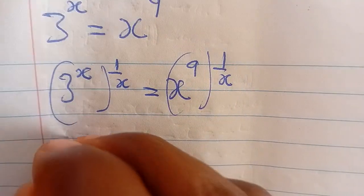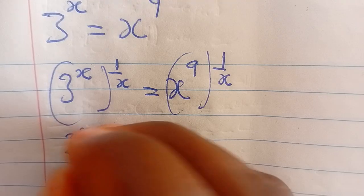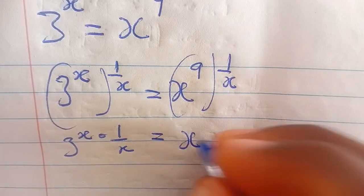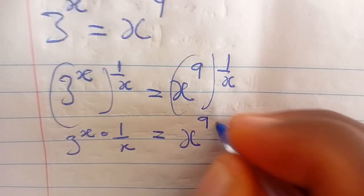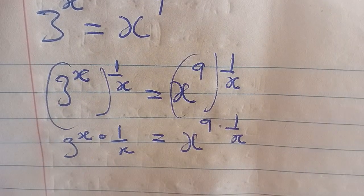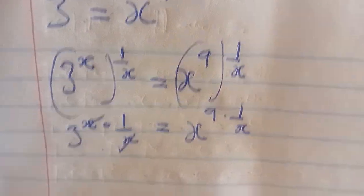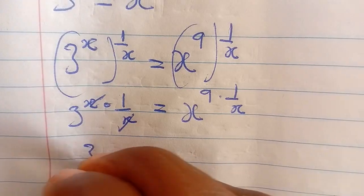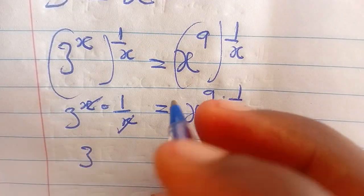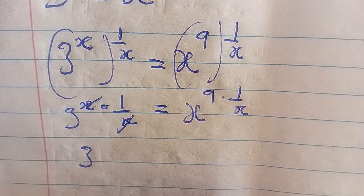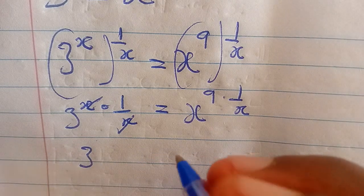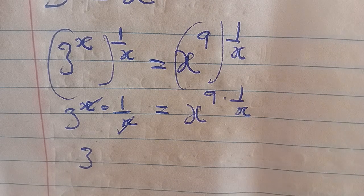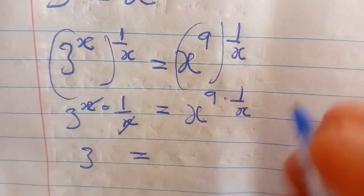So at the end of the day, this x cancels this x, and you are going to have 3 exponent 1. You can write 3 exponent 1, or you can leave it — 3 exponent 1 is the same as 3.